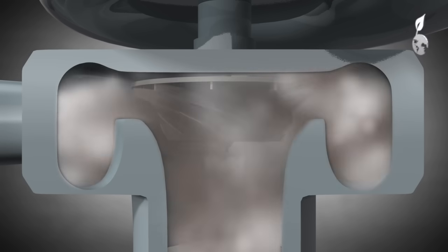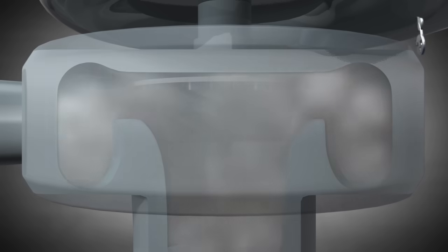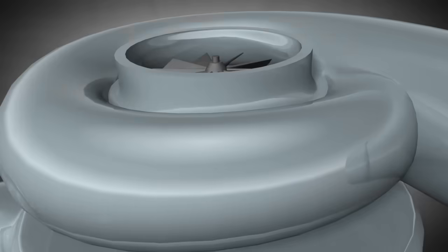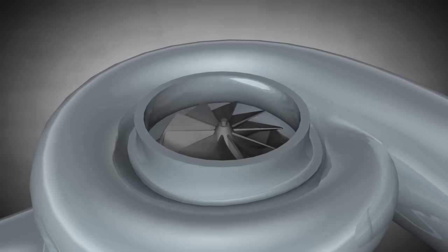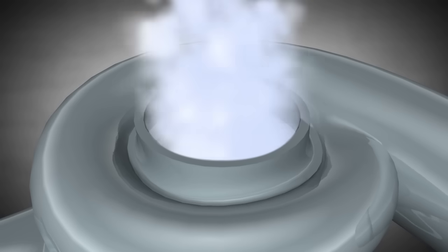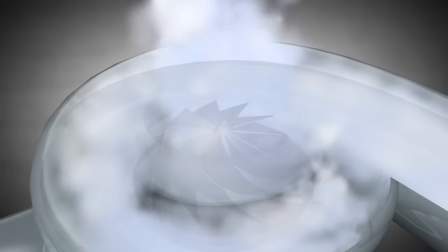As the turbine wheel and the compressor wheel share the same shaft, the compressor wheel spins at the same speed as the turbine wheel. Consequently, the compressor wheel draws in air and compresses it. Then, the air passes through the outlet port and supplies the engine with oxygen.